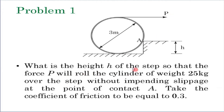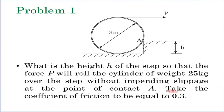What is asked of us is that the weight of the cylinder is 25 kg and we are told that at the point of contact A, the coefficient of friction — which is clearly static friction — is equal to 0.3. What we are asked to find out is the maximum step size, or maximum height H, over which you can roll this cylinder, given the coefficient of static friction of 0.3.